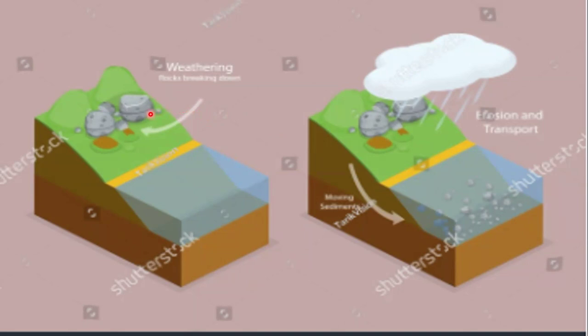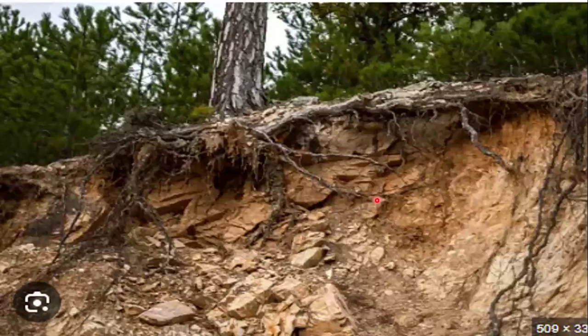Weathering has disintegrated the rock. The broken rock material is lying at the foothills of the rock. This rock material is eroded, carried away and transported to the place where it will rest finally. Weathering is followed by erosion. Erosion means to wear away — it is a process which removes the broken rock material from the place of its origin to the place of its resting.